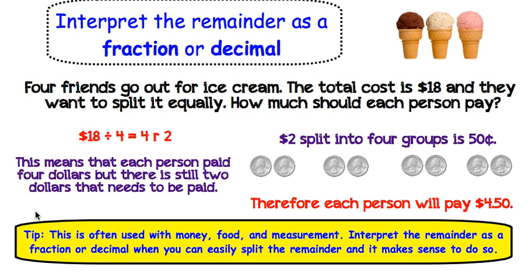Here is a tip for interpreting the remainder as a fraction or decimal. This is often going to be used with money, food, and measurement. You are going to interpret the remainder as a fraction or decimal when you can easily split the remainder and it makes sense to do so. Here we could easily split that $2 into 4 groups and it is going to make sense to do that because the 4 friends wanted to split the cost equally.